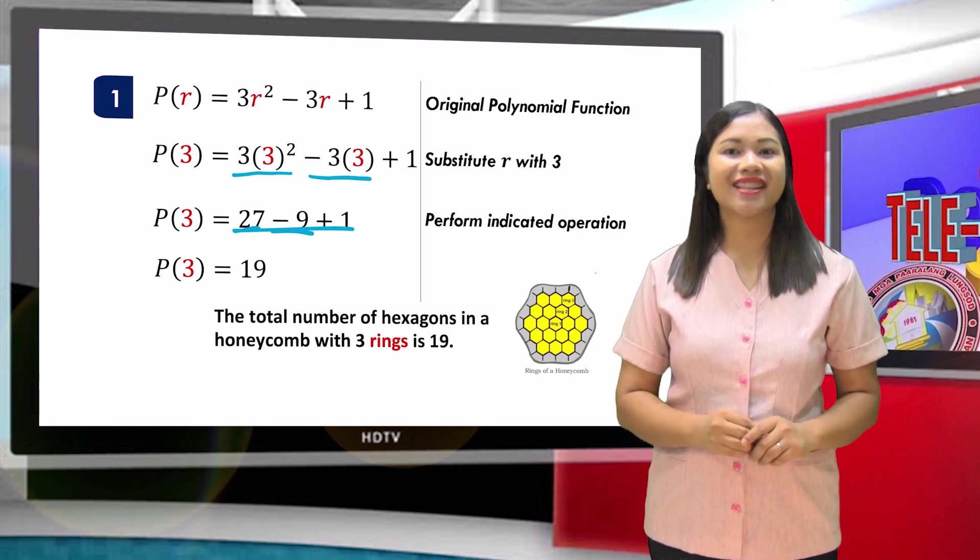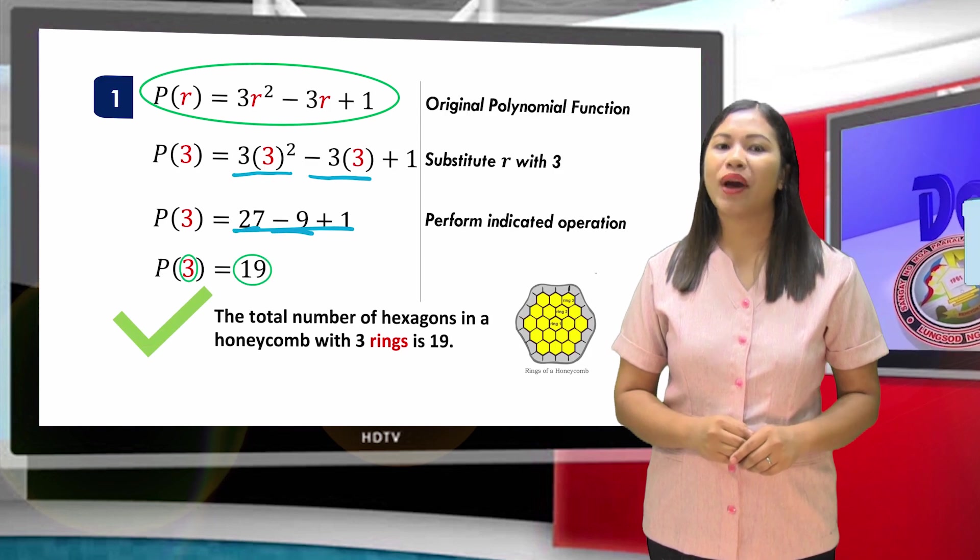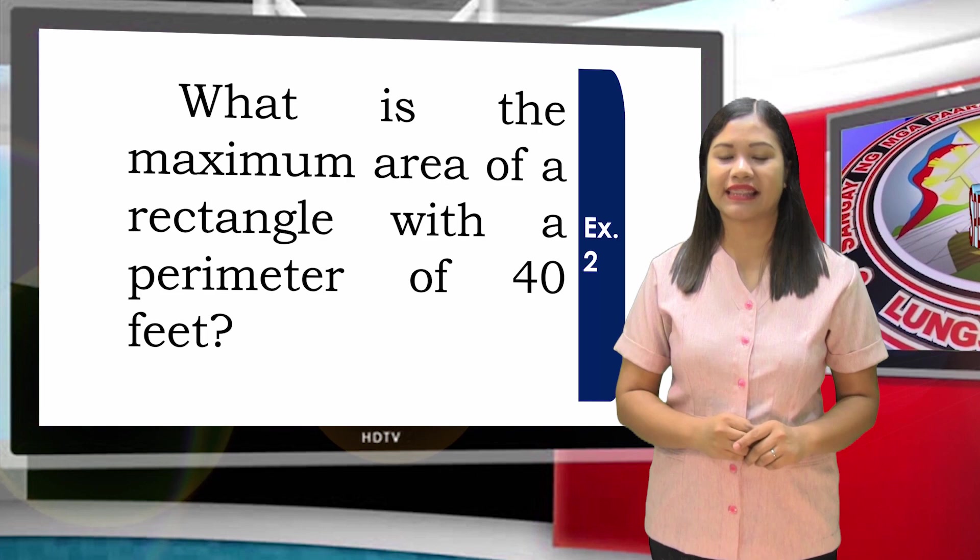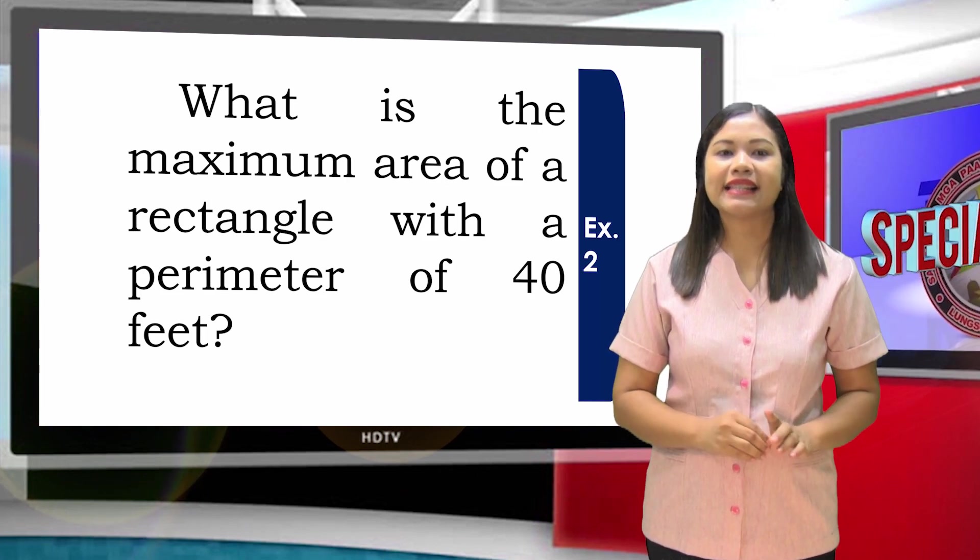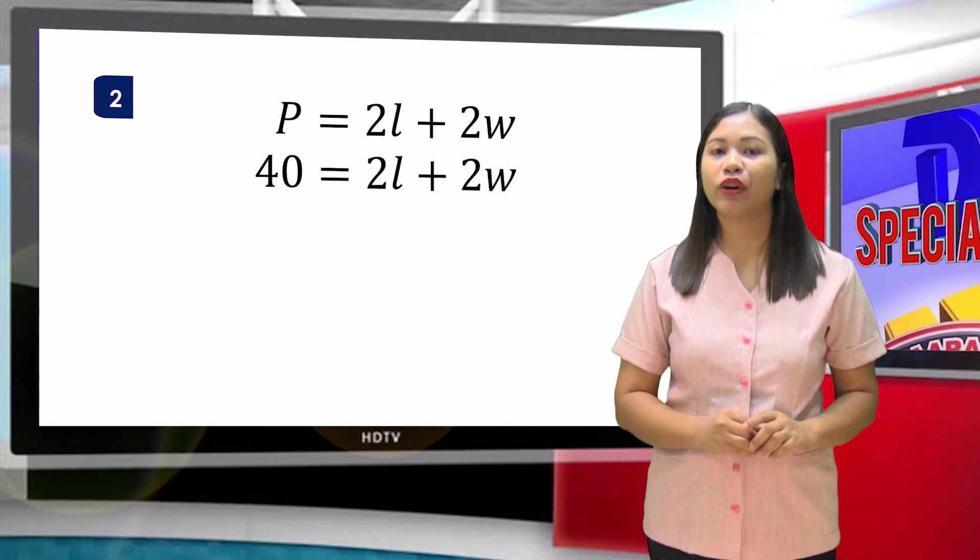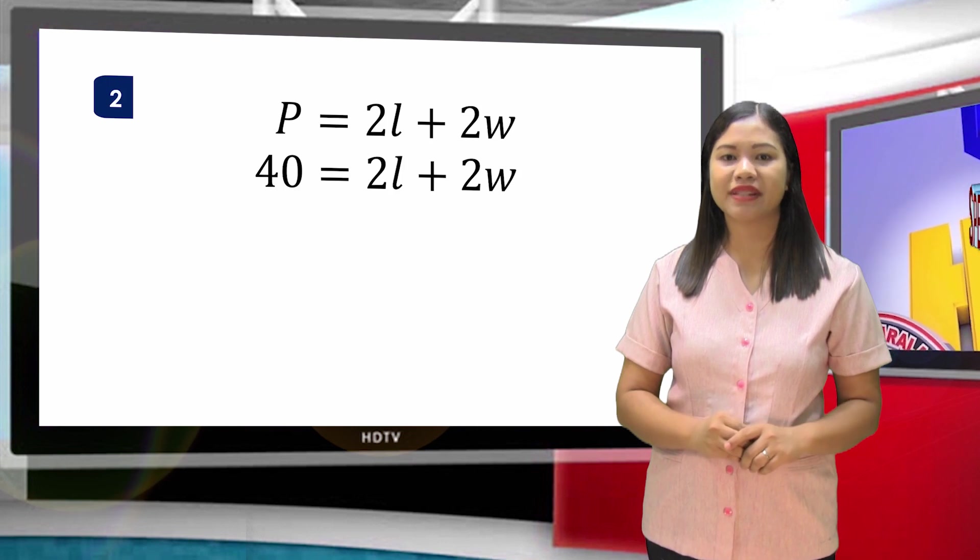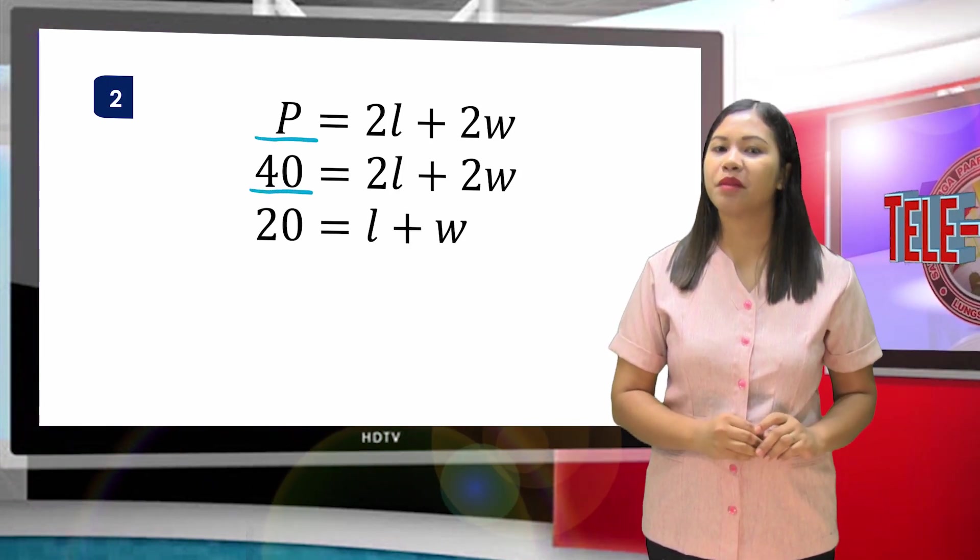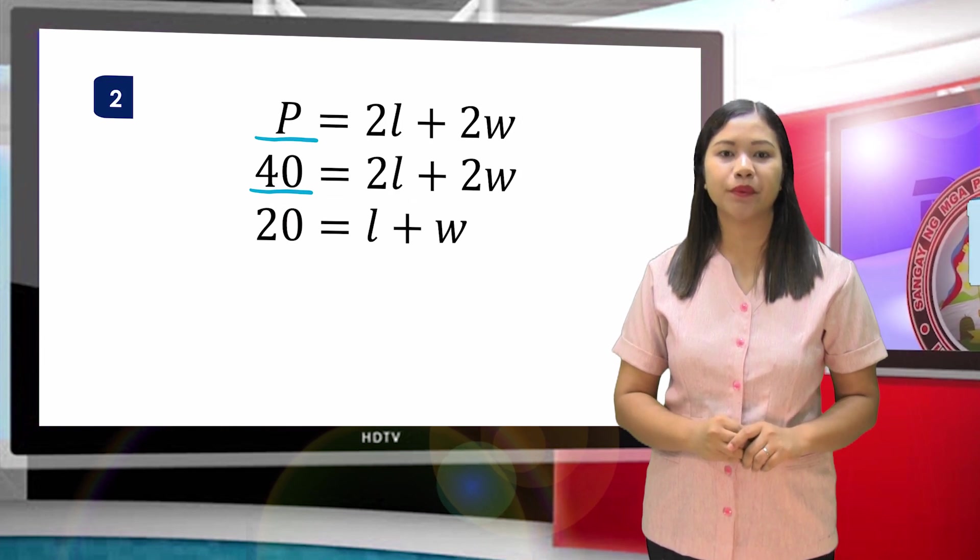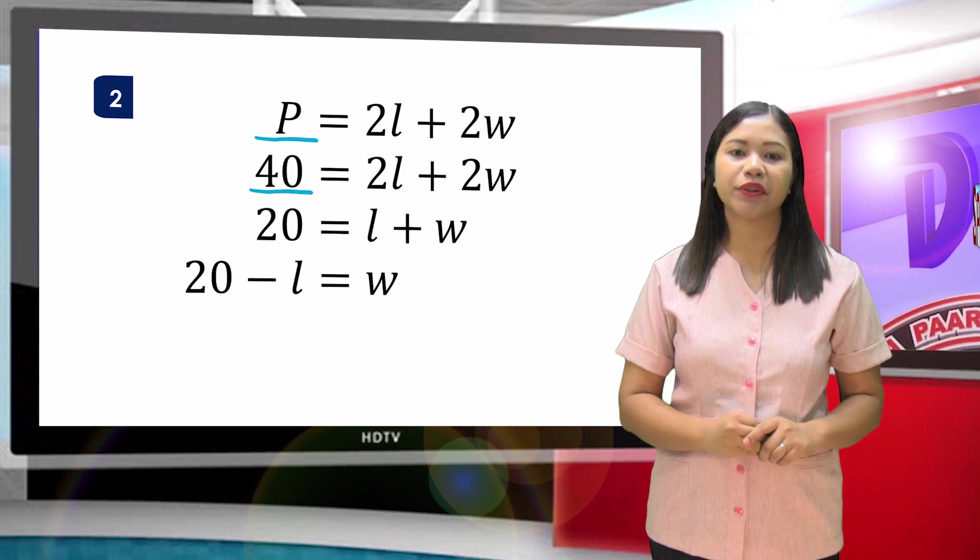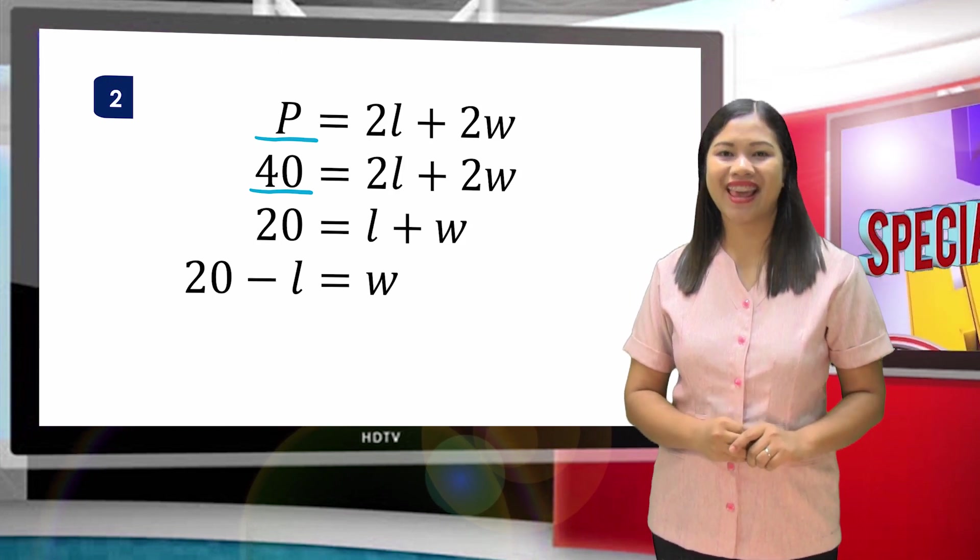Let's proceed to the second example. What is the maximum area of a rectangle with a perimeter of 40 feet? Since this is the formula in getting the perimeter of a rectangle and P = 40 feet, then 40 = 2L + 2W. Dividing both sides of the equation with 2, we have 20 = L + W. And solving for W, we have 20 - L.